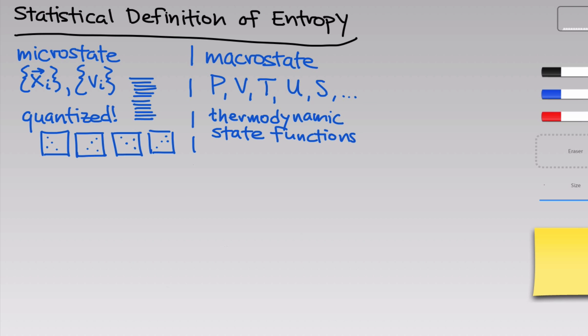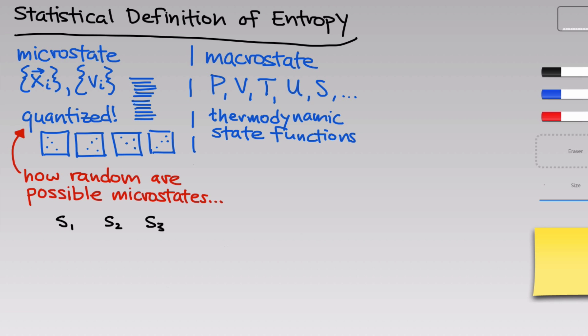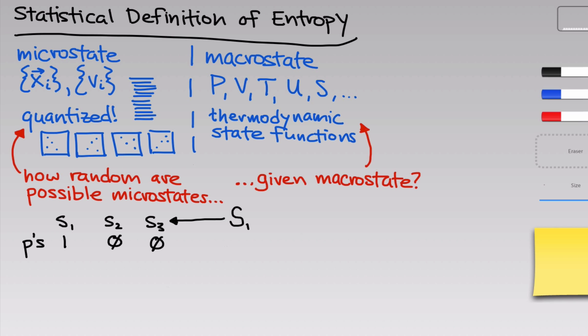The statistical definition of entropy deals with the question of how random are the possible microstates for a system given a particular macrostate. Consider a hypothetical example where microstate s1 has a probability of 1, while the probabilities of the second and third possible microstates are both 0. In this case, we know exactly the microstate of the system — the particles are frozen in space with zero velocity and known positions, so there's no randomness, and the entropy is 0.